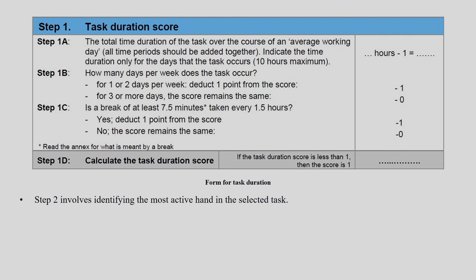Step 1B asks how many days per week does the particular task occur. First, in a day, how many hours are they doing it? Second, in a whole week, how many times are they doing it? For one or two days per week, you deduct one point from the score. For three or more days, the score remains the same. For example, if doing the task for seven hours, the result is 6. If it occurs only one or two days per week, it becomes 6 minus 1 = 5.